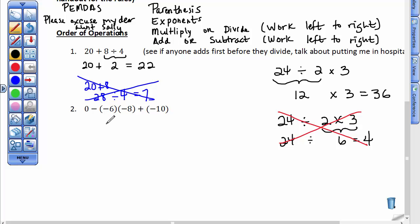Alright, let's go ahead here, 0 minus this product, so I should multiply this together. A negative times a negative is a positive, and then I'm going to bring everything down and now I'm going to work from left to right. If I have 0 and I take away 48, I'm going to add a negative 48. That gives me negative 48, and then I add a negative 10, and my total is negative 58.